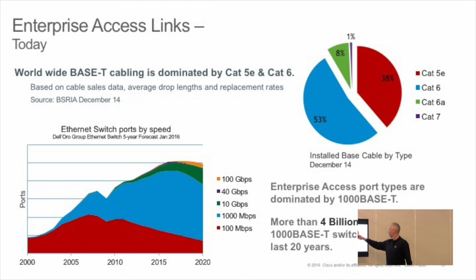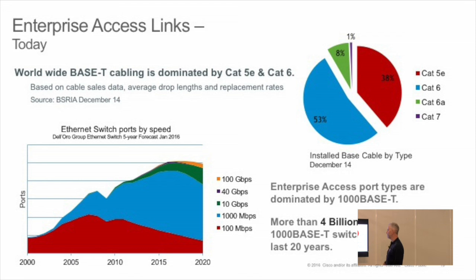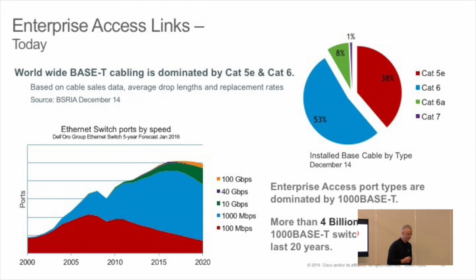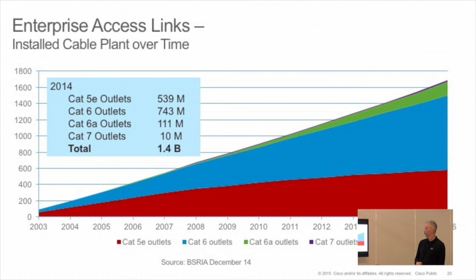Where we are today: we're dominated by Cat6, which is about 53% of the installed base as of 2014. Here is Cat5e. So 90% of the world's base cable is Cat5e and Cat6. We're also dominated by gigabit — the world is mostly on gigabit today.